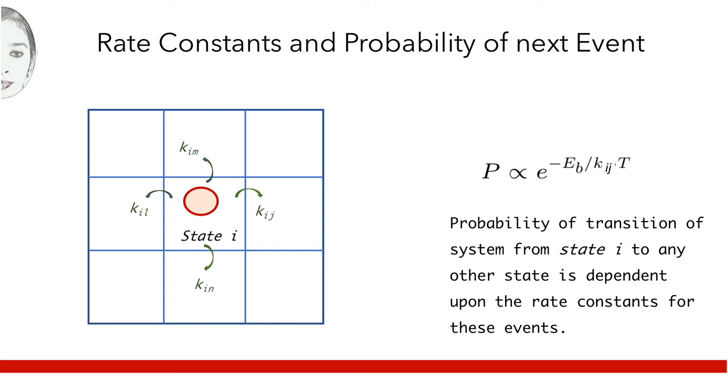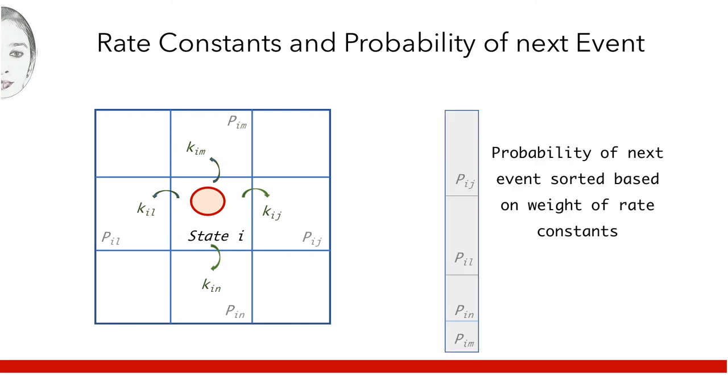However, the system has many possibilities of the next event, that is many energy basins in its neighborhood. Probability distribution for these events is determined and tabulated. Here the rate constants kij and kil are highest, and as such probability of the system going to state j and l are high. Therefore, when an event is picked randomly, most times it is the one with the highest probability.